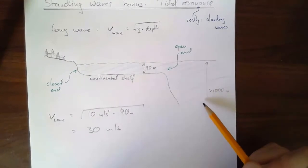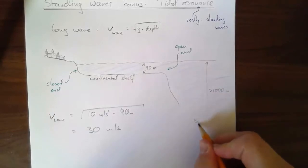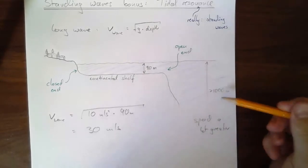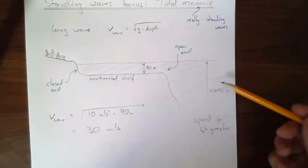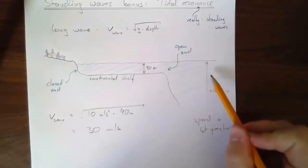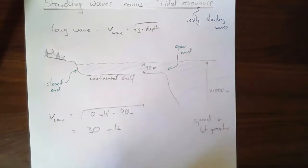Now, over here, where it gets deep, the speed will be very different. So here, the speed is a lot greater. If the depth were 1,000 meters, then it would be 100 meters per second. If the depth is 4,000 meters, it would be 200 meters per second. So the wave speed here is a lot faster than there.